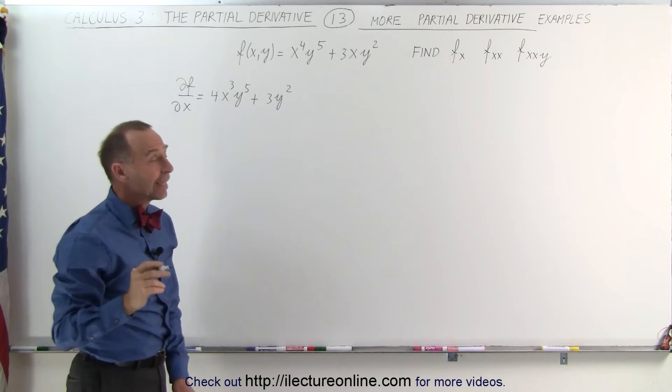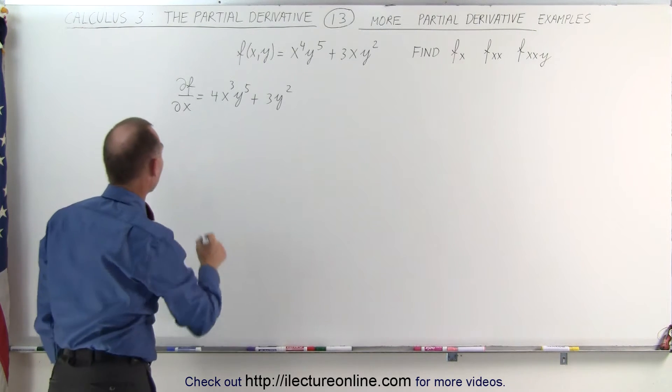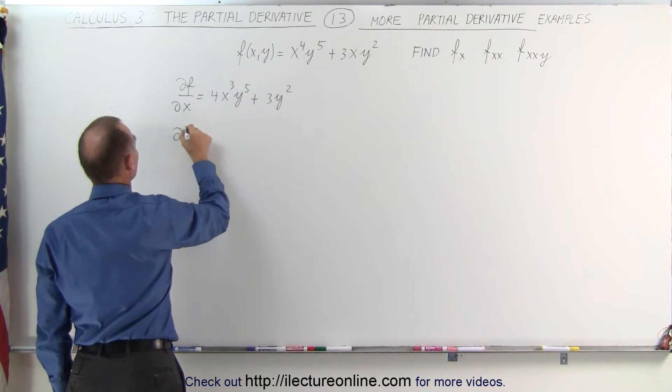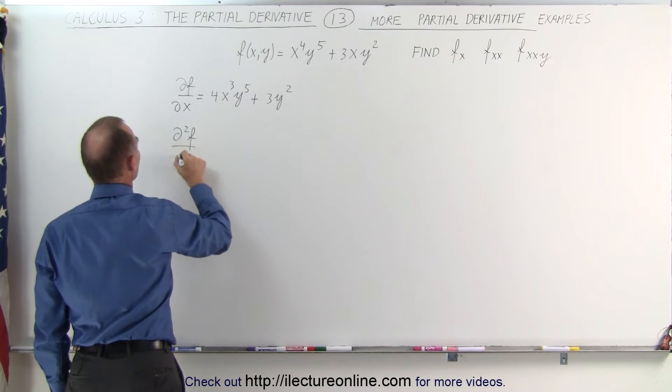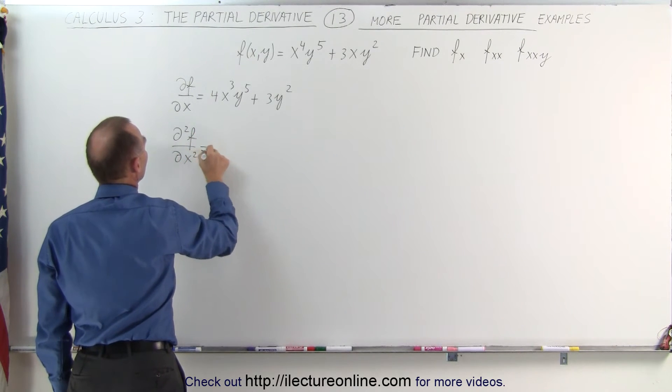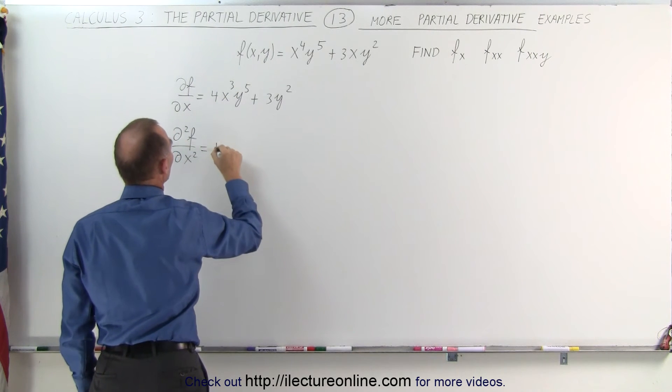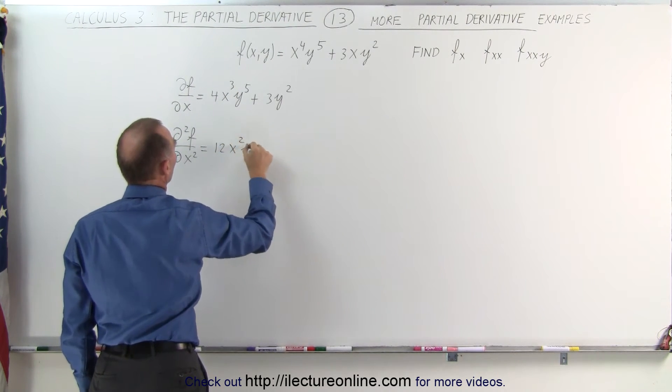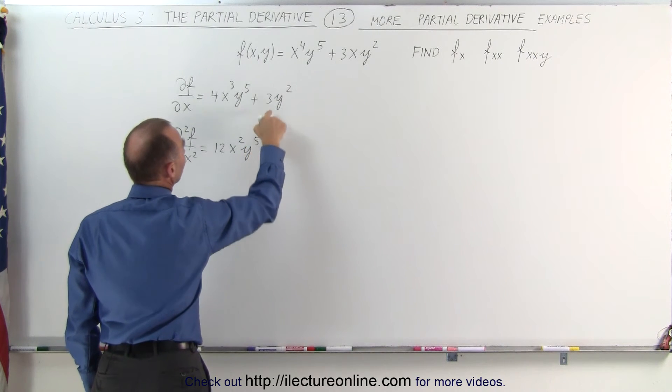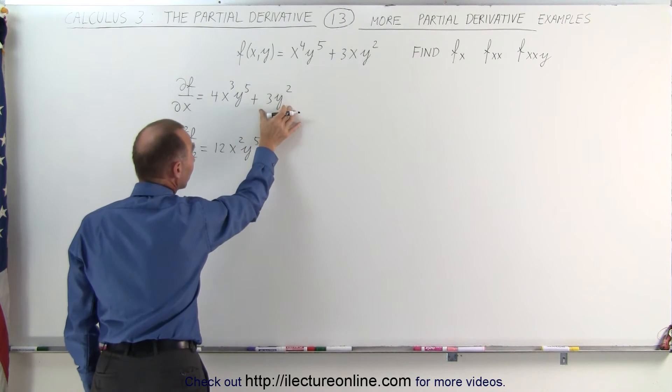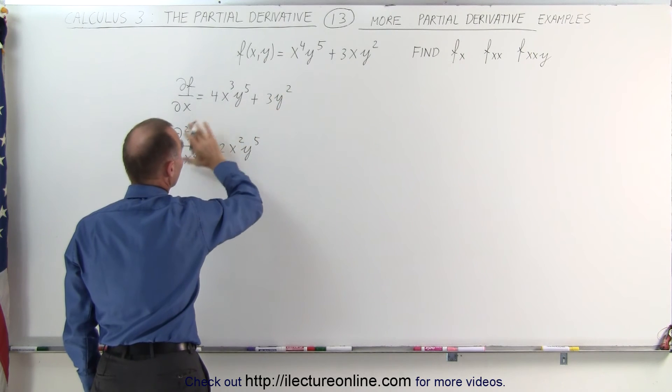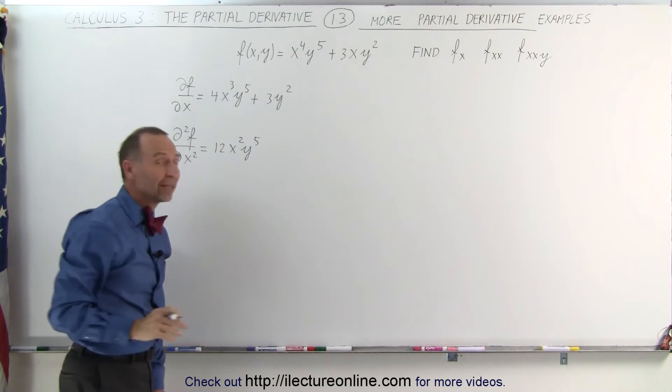Now we take the second partial derivative with respect to x. So the second partial derivative of the function with respect to x is equal to... Here again, y to the fifth will become a constant. This is 3 times 4, or 12x²y⁵, plus 0, because this is now a constant. There's no x variable in here. Take the partial of that with respect to x, you simply get 0.